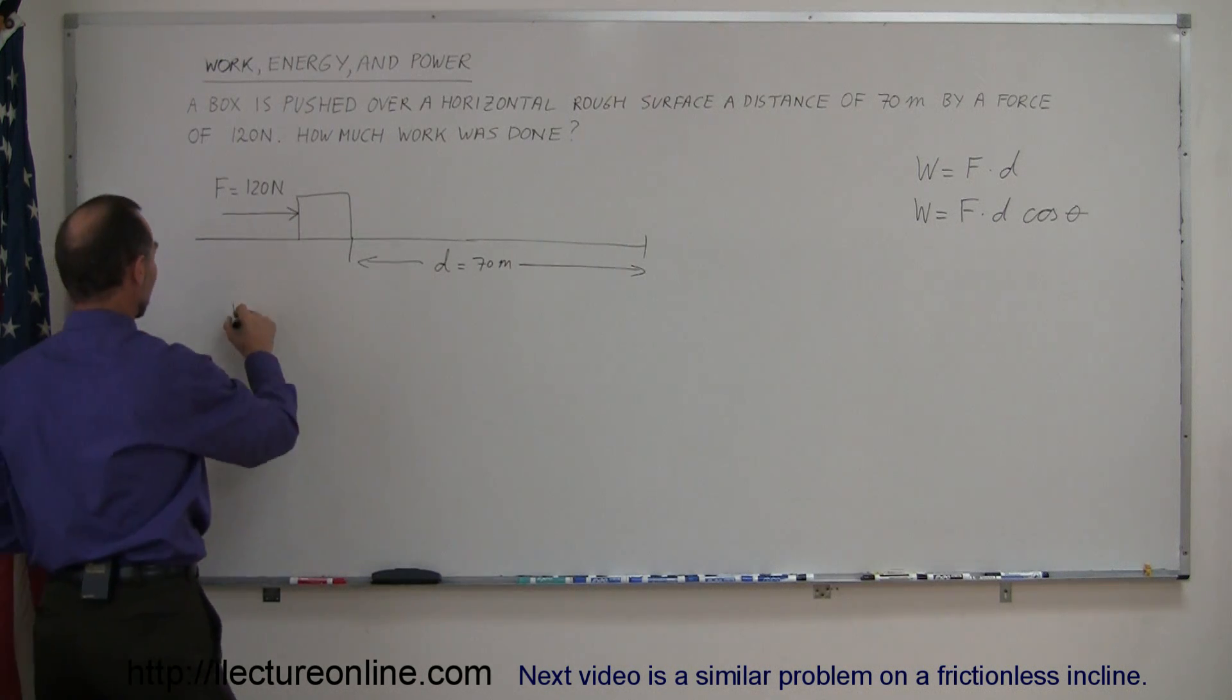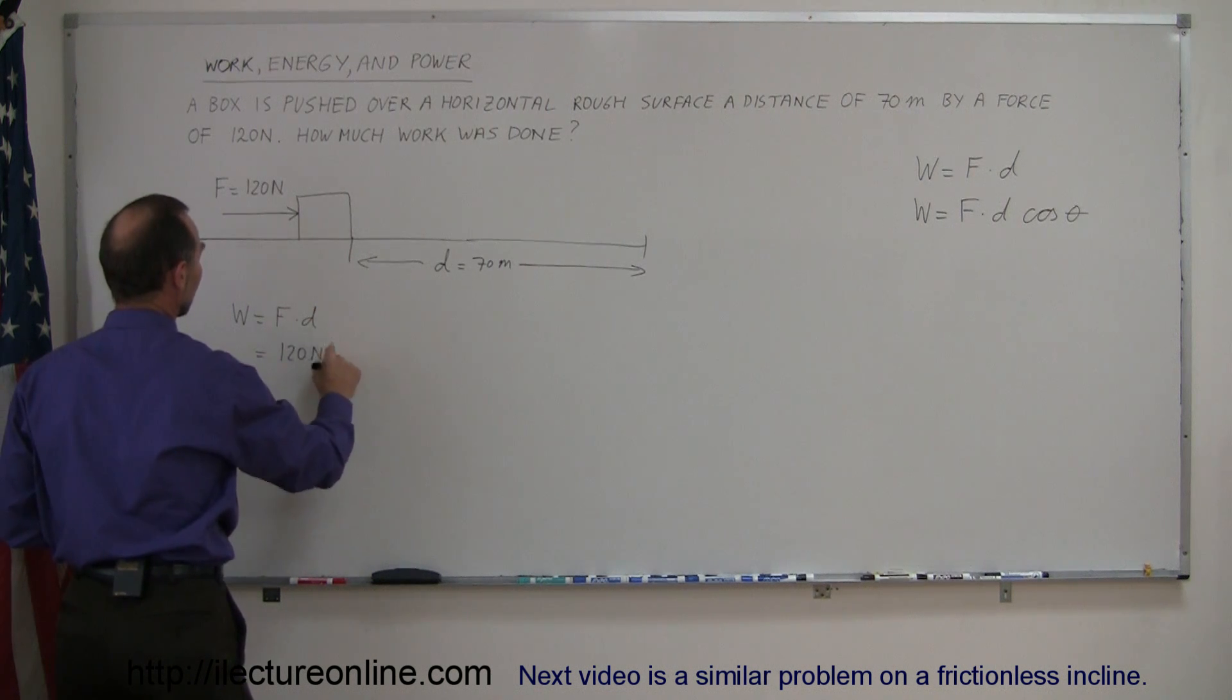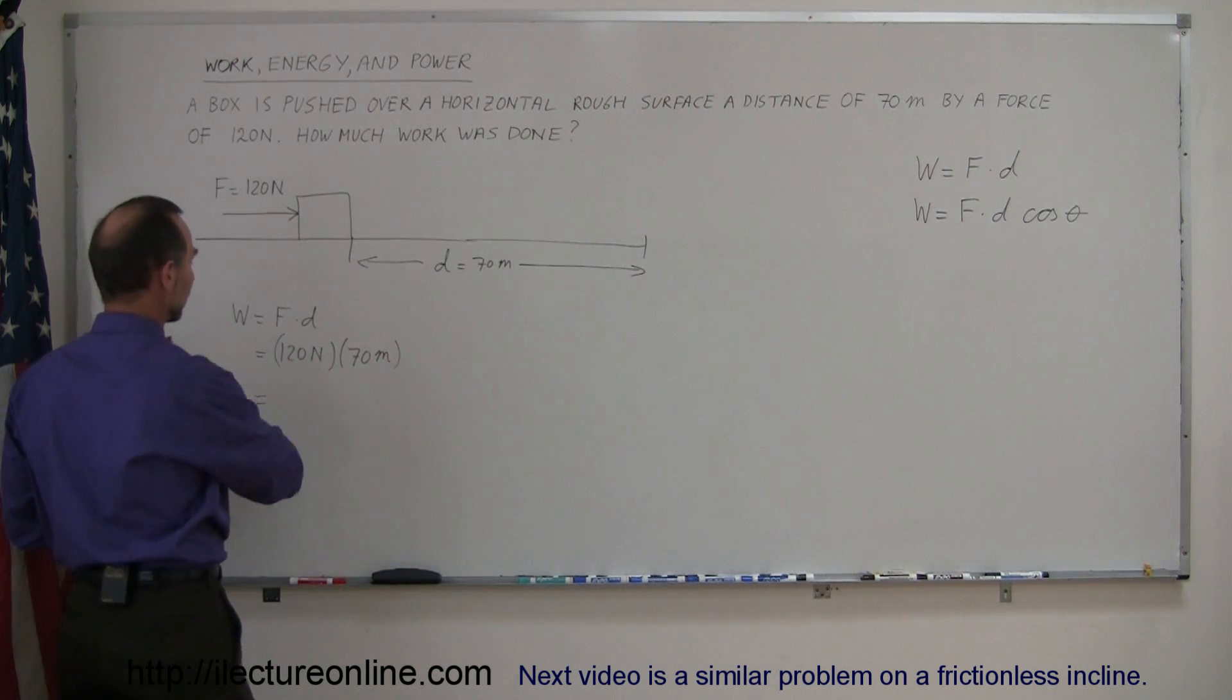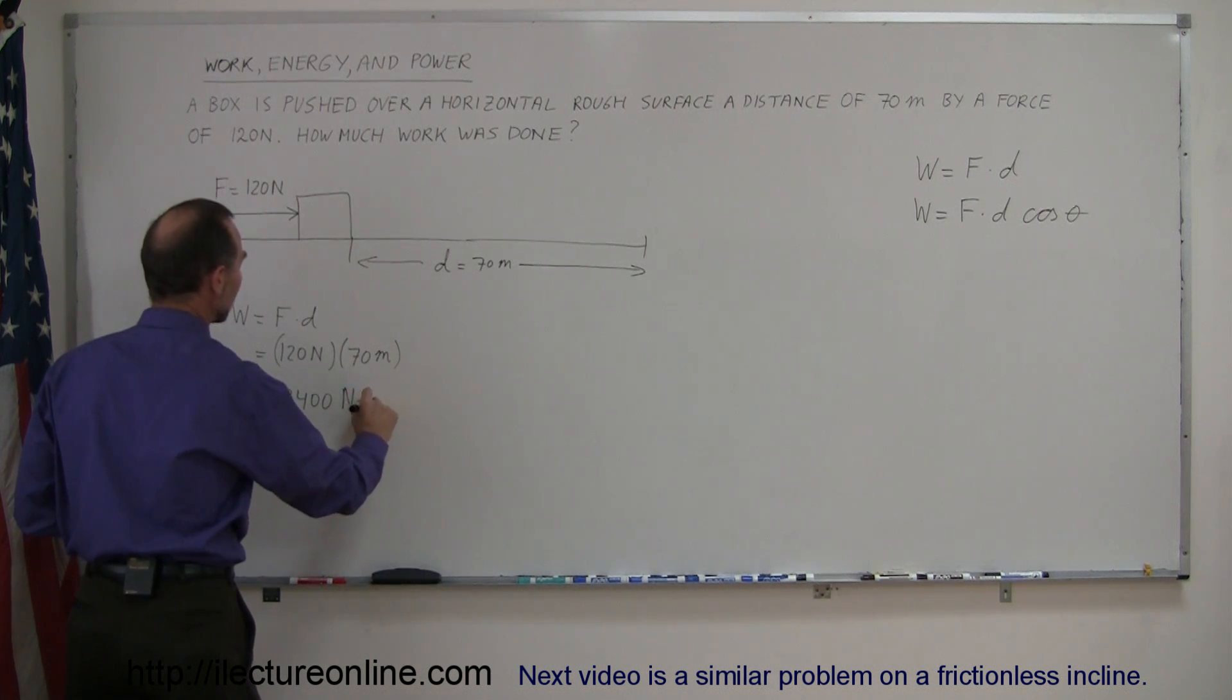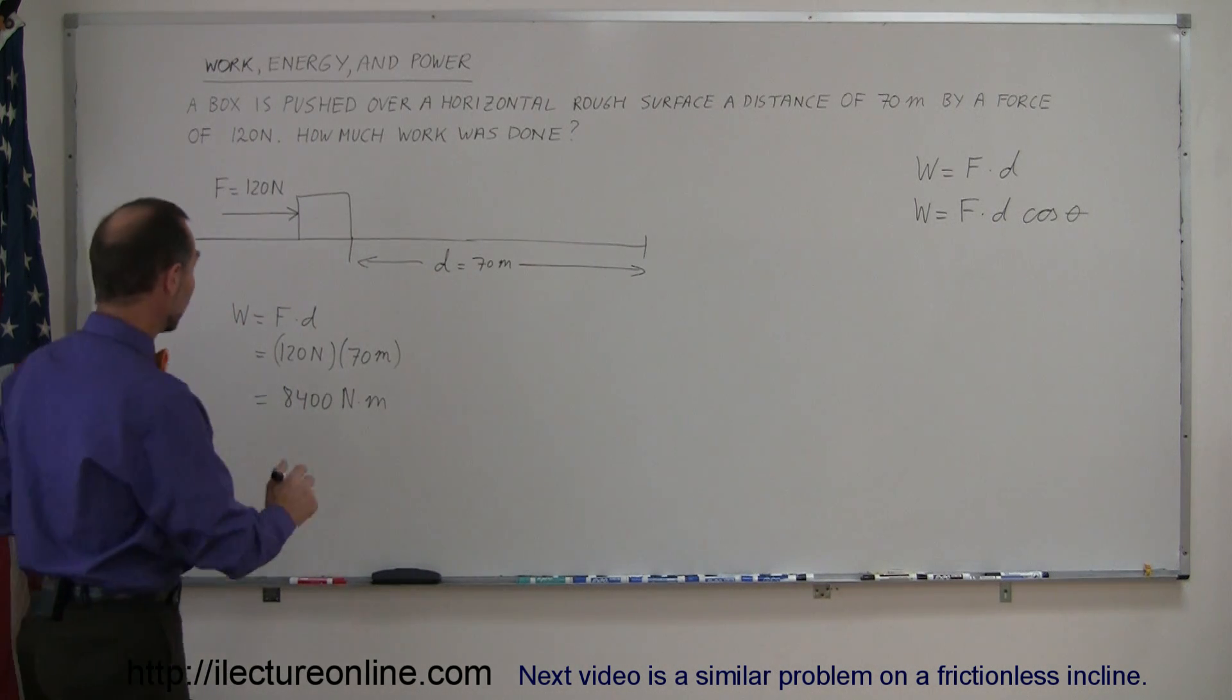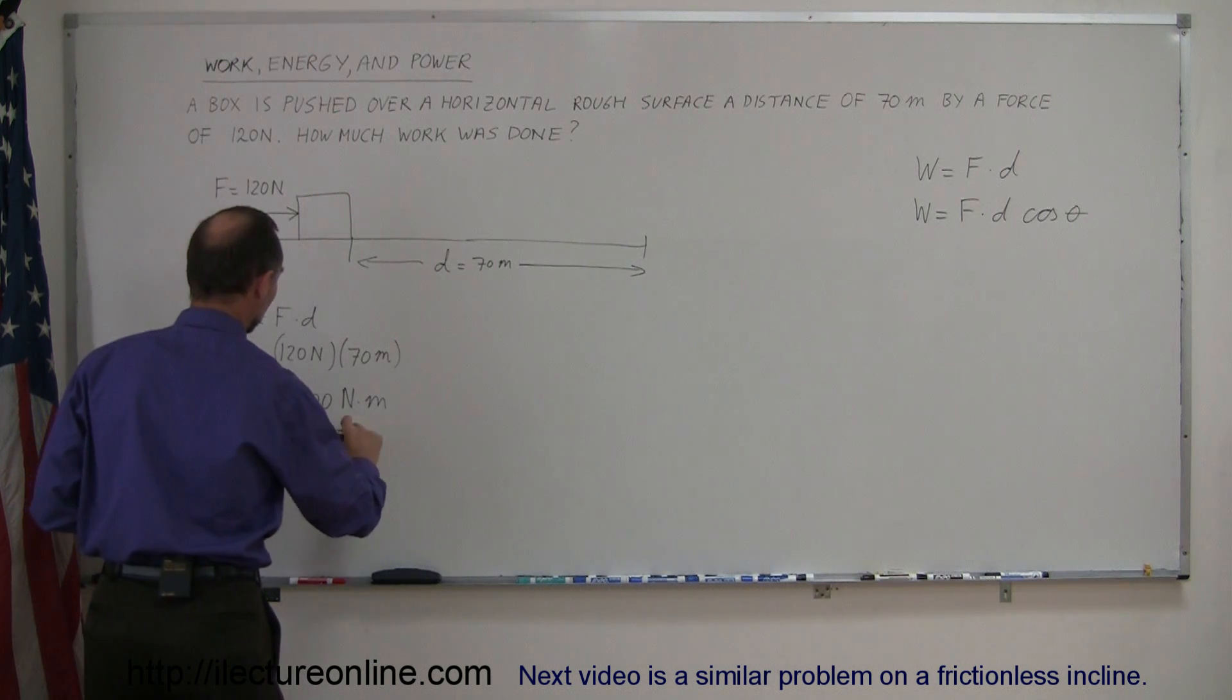If the angle of the force is the same direction as the displacement of the box, we simply have to write that the work is equal to the force times the distance, which is equal to 120 newtons times the distance of 70 meters, and that would be equal to 8,400 newton meters. Now we have a new unit for that, newton times meters is the same as joules, so we can write that this is equal to 8,400 joules.